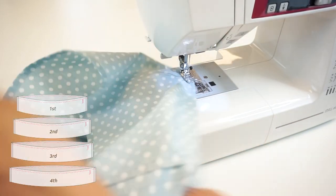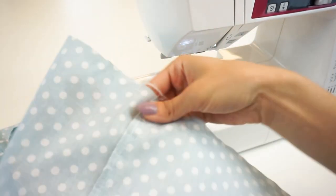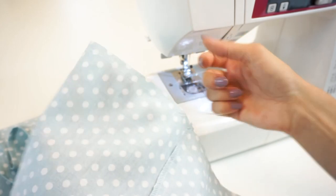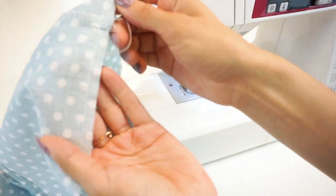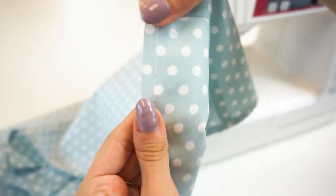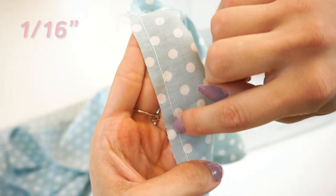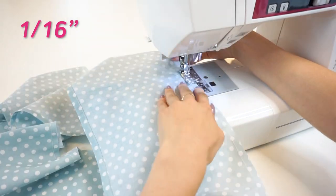It is important to leave long tails of thread at the beginning and at the end of the stitch. Also do not backstitch at all. The second stitch should be approximately two to three millimeters higher than the first stitch.